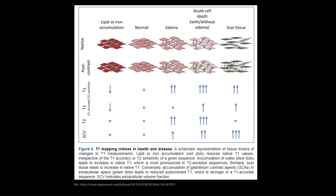Here are certain examples showing what happens to T1 mapping, T2 mapping, and ECV across different conditions. In normal myocardium, all values are normal. With lipid or iron deposition, T1 is low while T2 and ECV are normal. With edema, T2 is high, T1 is high, and ECV is slightly raised — as in acute MI. With fibrosis or scar tissue, T1 is slightly raised, ECV is relatively very high, but T2 is normal since there is no edema.